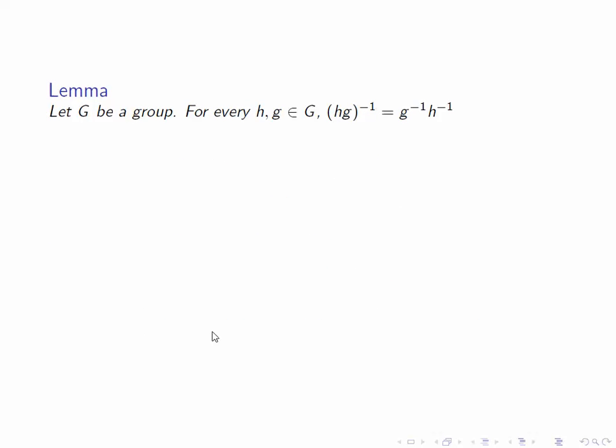Secondly, let's look at the inverse of a product. The inverse of HG is the product of the inverses written in the opposite order. To prove this, we just have to show that G inverse H inverse behaves as the inverse of HG. In other words, when we do the multiplications, we get the appropriate identity element.